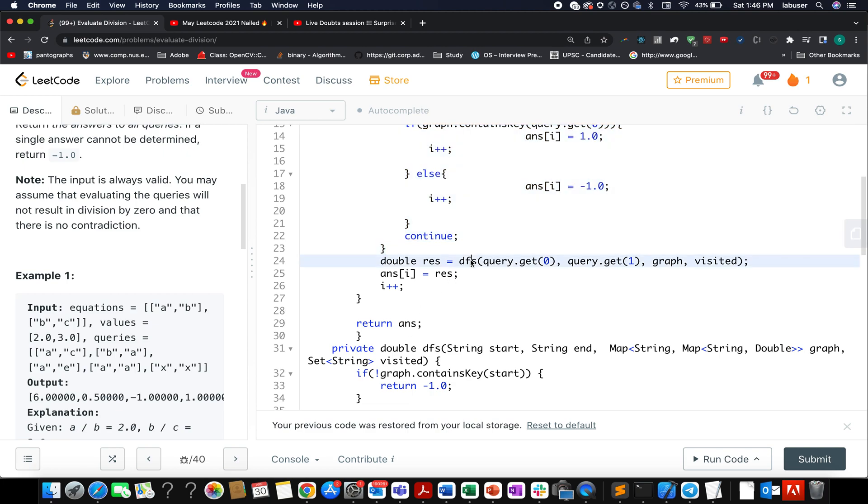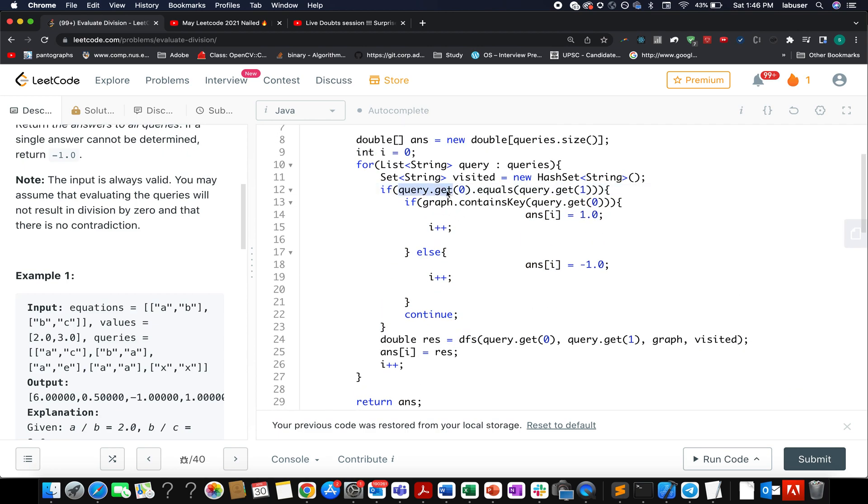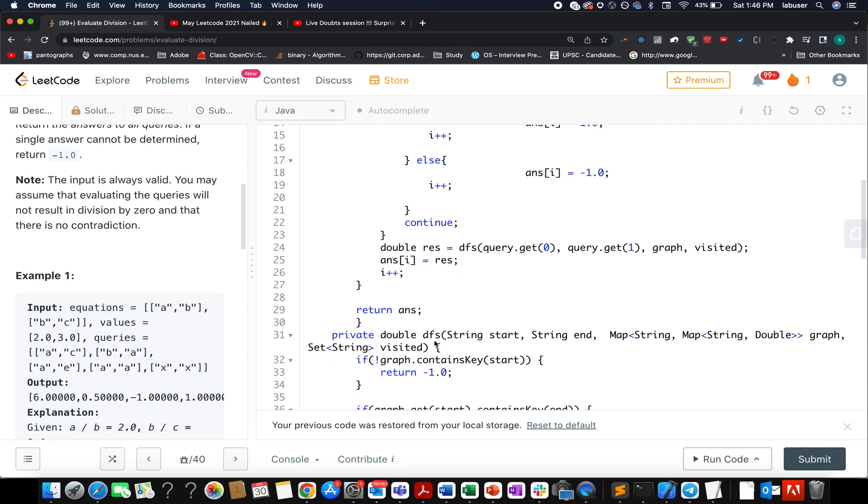What do I do? I invoke the DFS method for cases where my source is not equal to my target. I invoke the DFS method and whatever value is returned from that DFS helper method, I set it to my answer and proceed with the next traversal. In the end, I return the answer. Now the problem reduces to writing this DFS method appropriately.